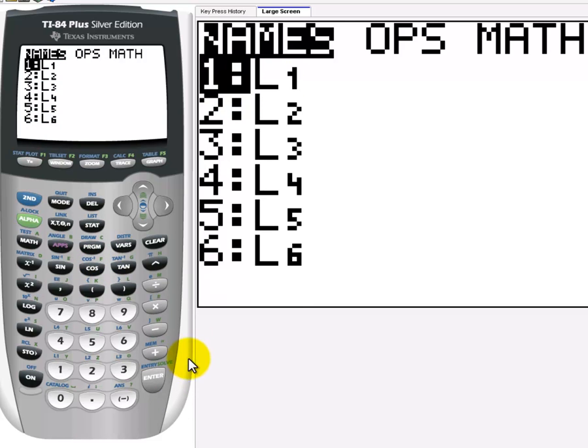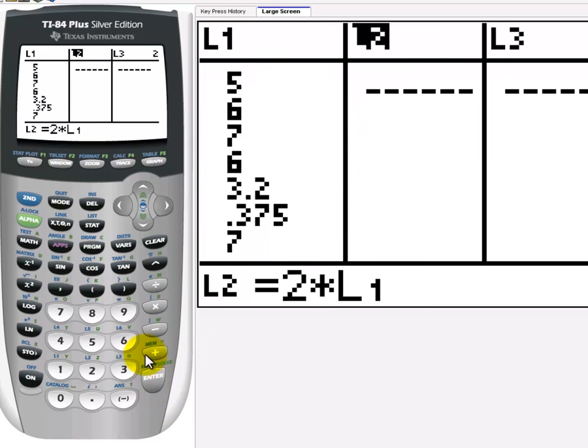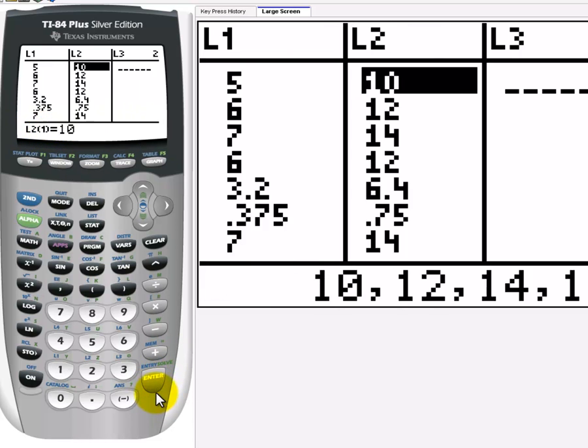And this lists my 6 lists that are available by default. So, L1 here, I hit enter. So, now you see L2 is going to be equal to 2 times whatever is in list 1. Enter. And you see we've doubled all of these values.